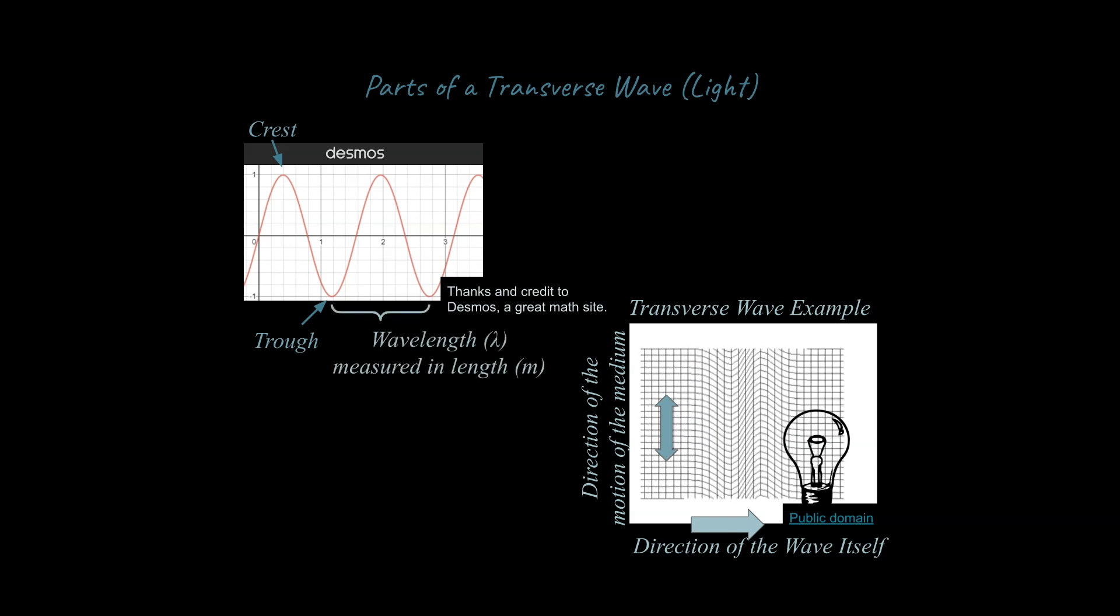And a wavelength is going to be measured like all lengths are in meters or some metric variation of meters. And that's going to be the distance between, say, one trough to the next trough or one crest to the next crest, you could say. I will say that's the easiest way to measure what a wavelength is between one trough and the next trough or one crest and the next crest.